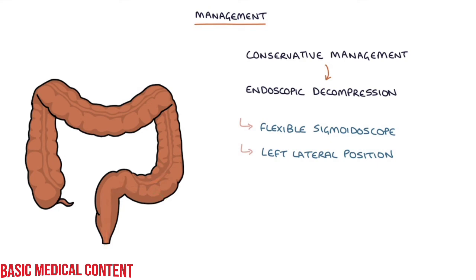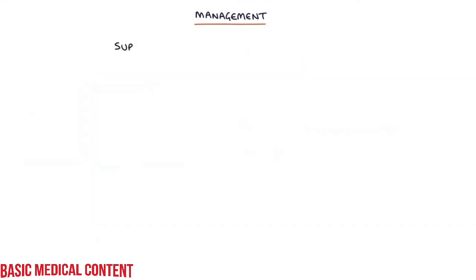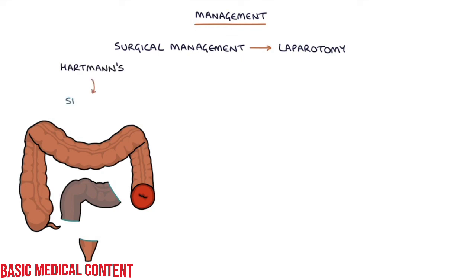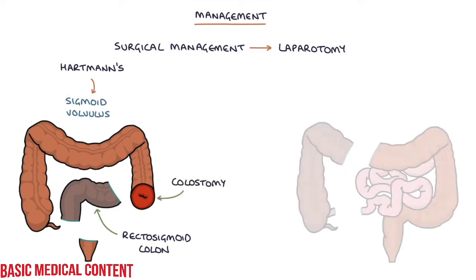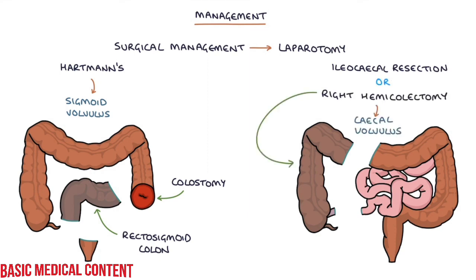If conservative management is used, there's a risk of recurrence of around 60%. Surgical management of a volvulus involves a laparotomy, which is open abdominal surgery. For sigmoid volvulus, a Hartmann's procedure is performed — removal of the rectosigmoid colon and formation of a colostomy. An ileocecal resection or right hemicolectomy is performed for a cecal volvulus. Essentially, surgical management involves removing the section of bowel affected by the volvulus.